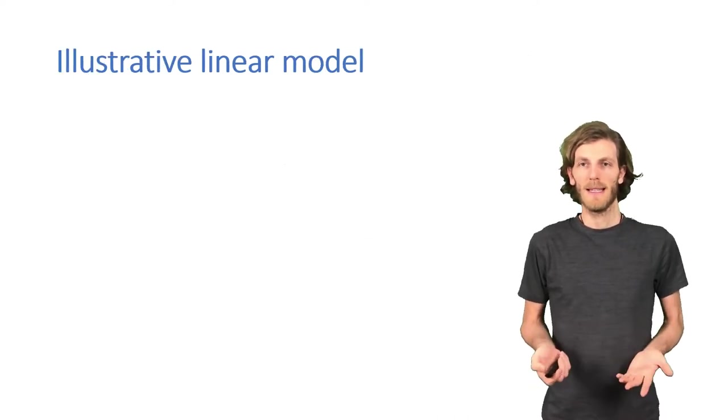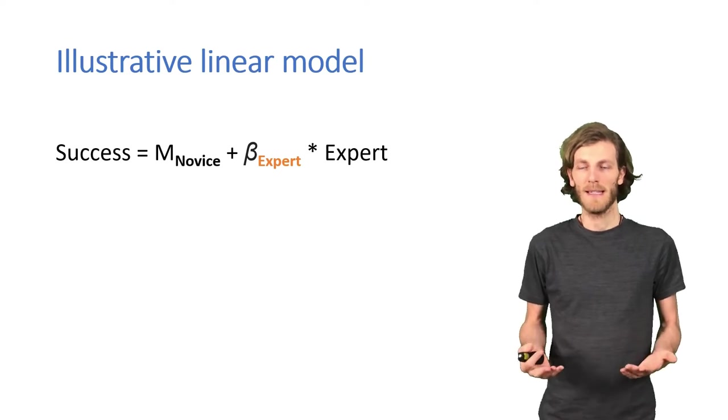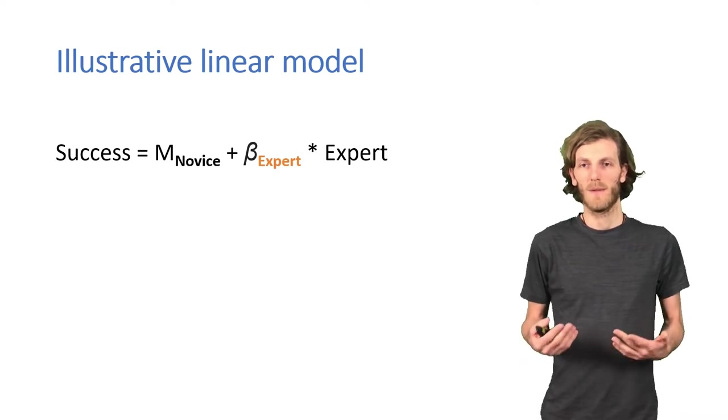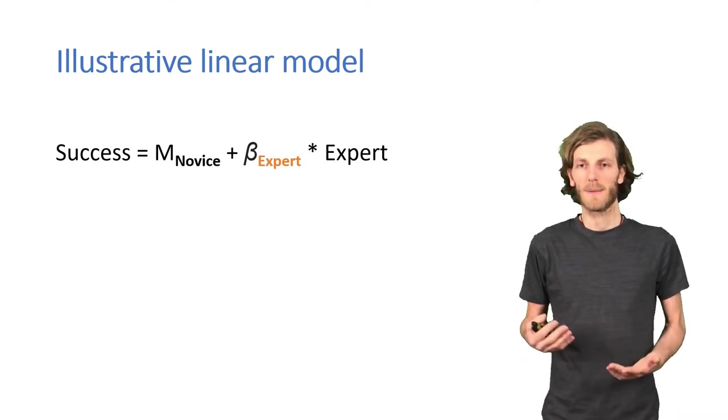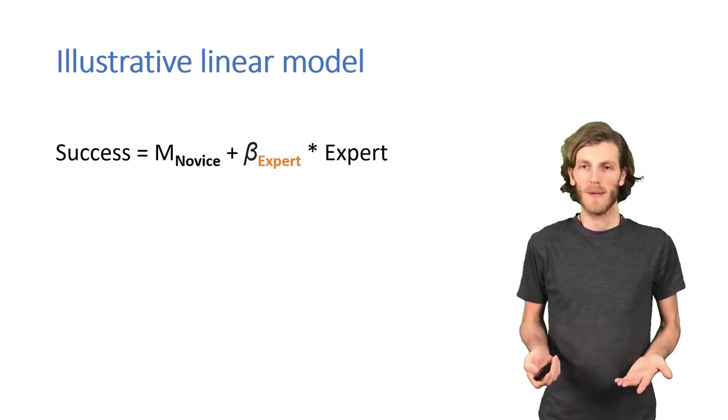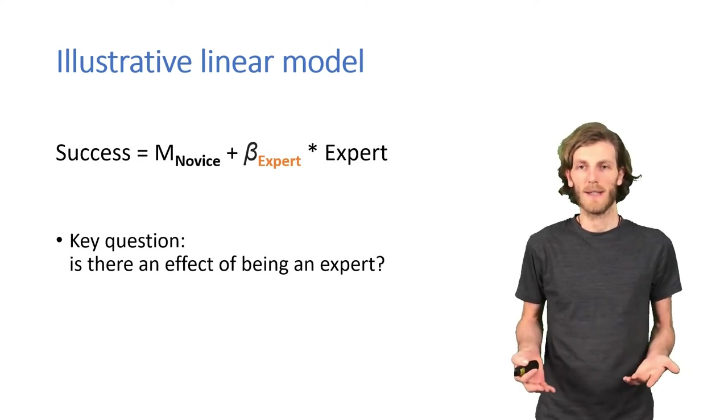If we ran a linear model on this, this would be our very standard linear model, where we have an intercept, the intercept is the average for novices, and we have an effect of expertise, which is the parameter for expertise applied if the case is actually an expert. The question we answer with that is, is there an effect of being an expert. Quite straightforward.